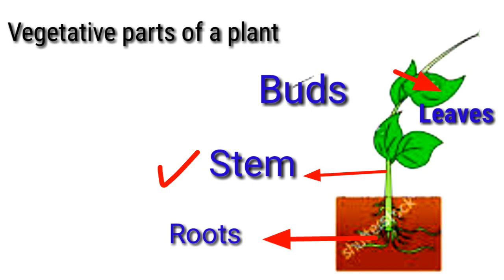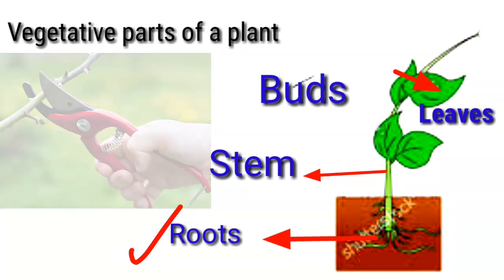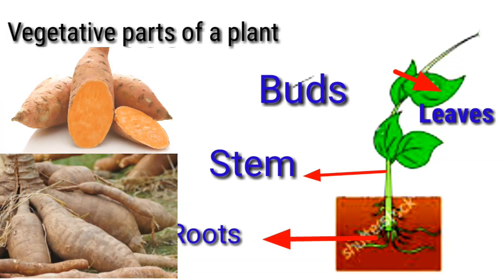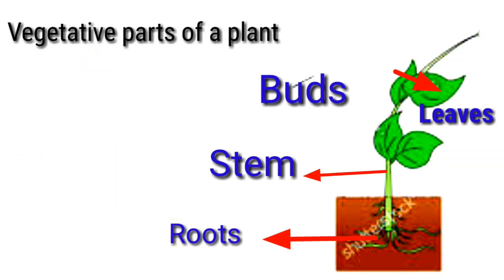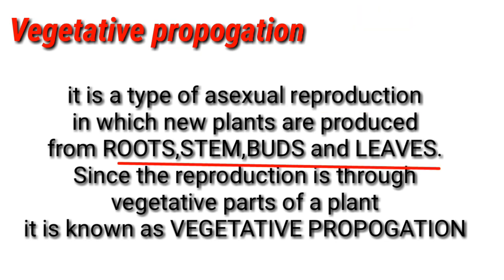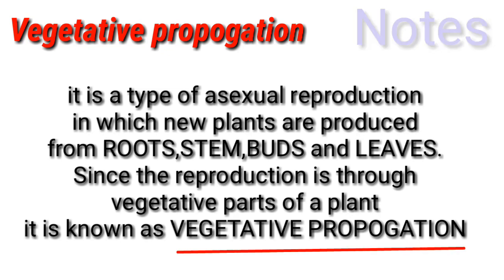We have a rose plant — this has a stem. That is the root. Now we have a sweet potato — it has a root. The definition of vegetative propagation: it is a type of asexual reproduction in which new plants are produced from the vegetative parts of a plant — roots, stems, leaves, and buds. Since reproduction is through vegetative parts of a plant, it is known as vegetative propagation.